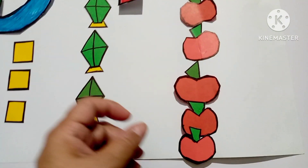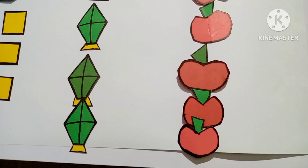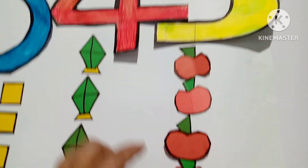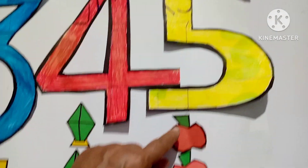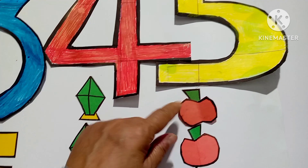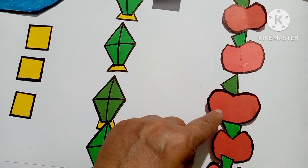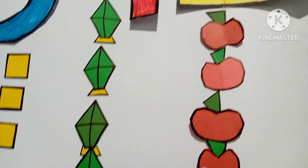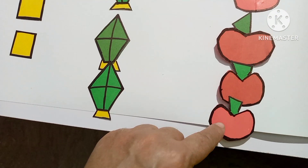There are five apples. This is number five. Let's count: one, two, three, four, and five. Five apples.